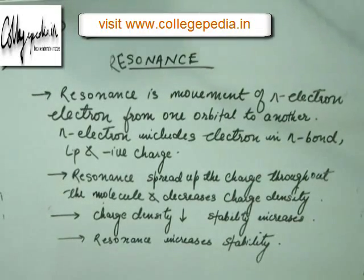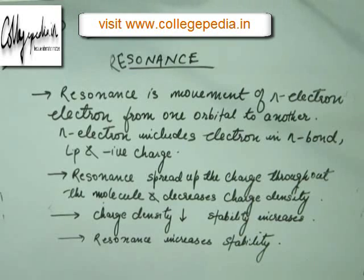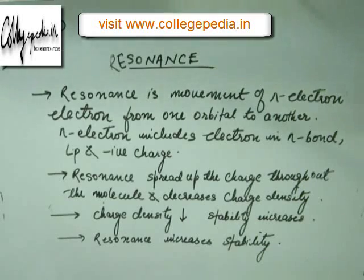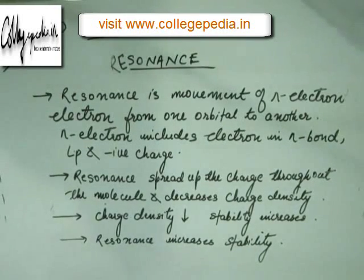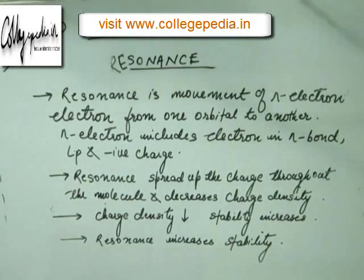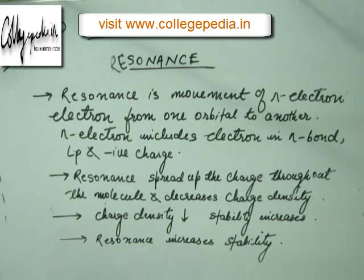Hello friends, I welcome all of you in this new lecture of this course of organic chemistry. We have been doing resonance since the last two lectures and we have already understood how to draw resonating structures and what is the immediate implication of resonating structures. From resonating structures we learn to draw a resonance hybrid, in which the real distribution of electrons and charge is shown.